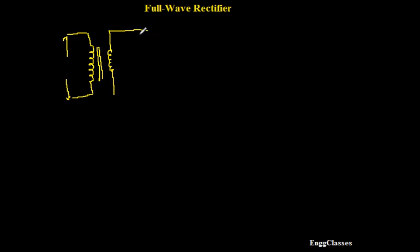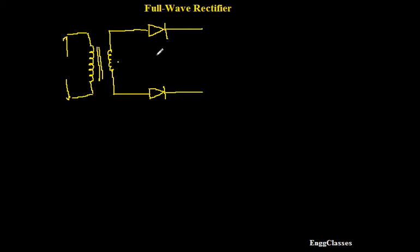Now we have one step down transformer and we are going to have two diodes. I should connect them such that one diode conducts during the positive half cycle and the other diode conducts during the negative half cycle — that arrangement is called a full wave rectifier. This is the circuit diagram of a full wave rectifier. I should have one load resistor where I measure the output waveform, and this is called the load resistor.